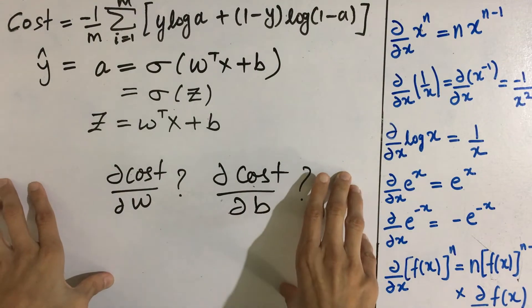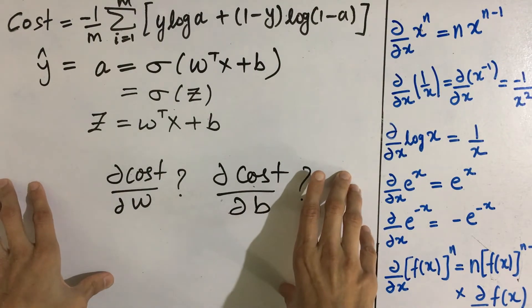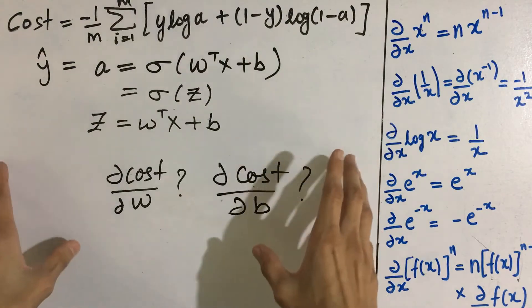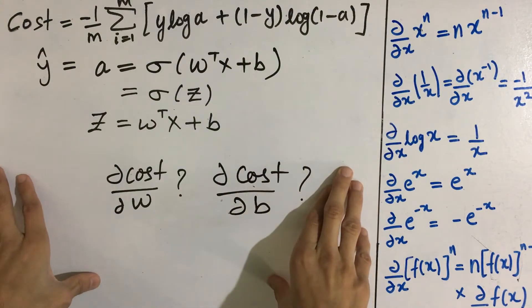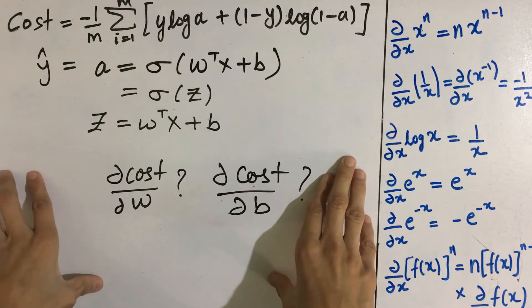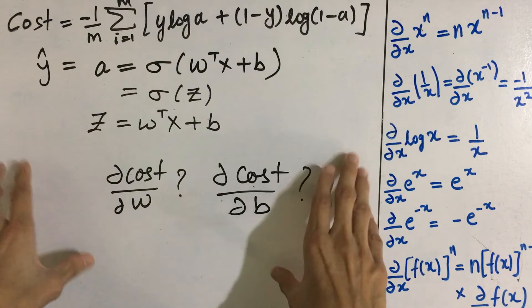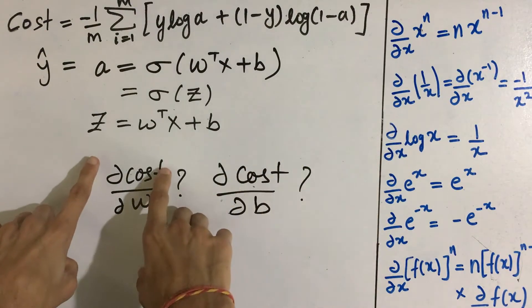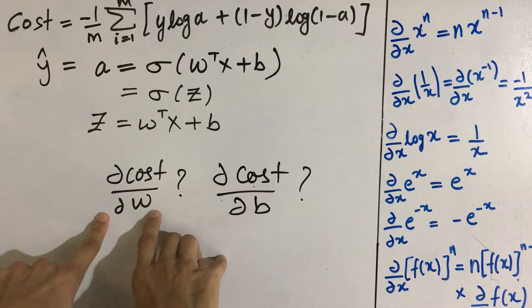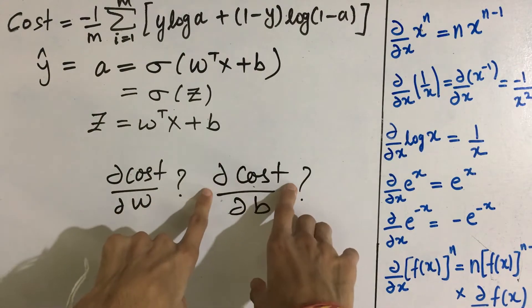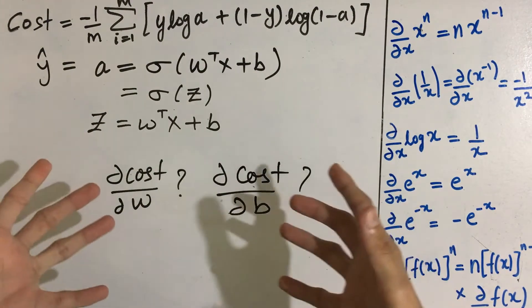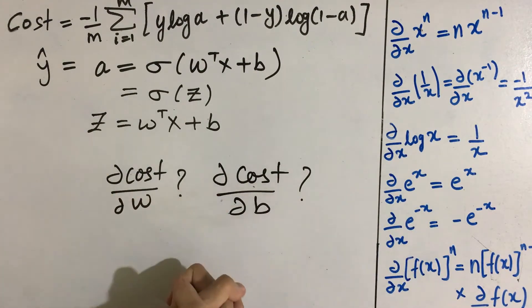What's going on everyone, this is Jay Patel, and in this video we will compute the derivative of cost in logistic regression. While implementing logistic regression gradient descent, we need to compute the derivative of cost with respect to parameter w and the derivative of cost with respect to parameter b. That's what we are going to compute in this video.